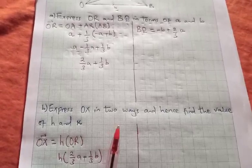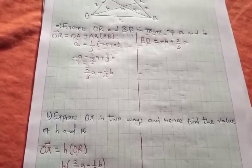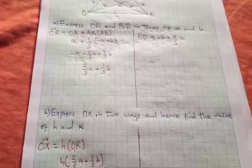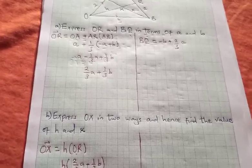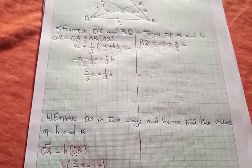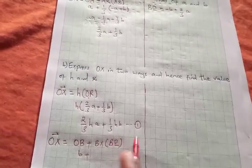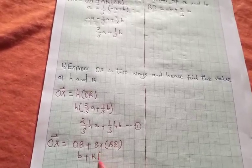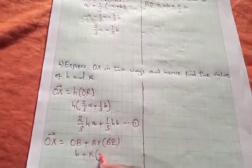Now we are going to say that OX is in fact OB plus BX of BQ. And what is OB? OB is given by vector b, plus BX. Our BX is in fact K of BQ. What is BQ? We already have our BQ here as negative b.